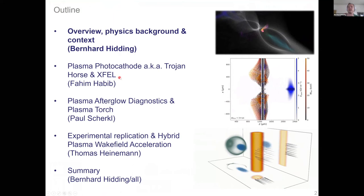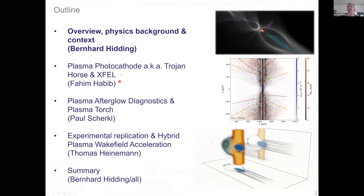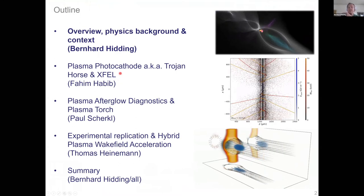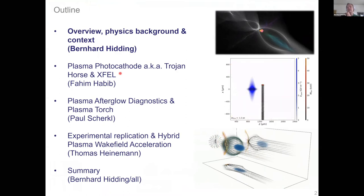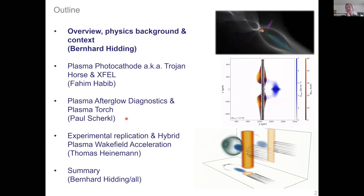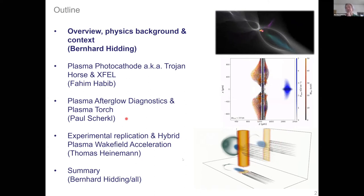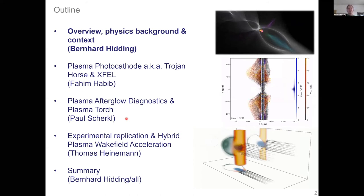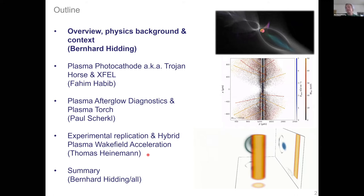I'm starting with an overview and the physics background of what we are doing, then Fahim, Paul, and Thomas — PIs in my group who concentrate on certain aspects of our simulations — will take over. I give the physics background and overview, then Fahim will talk about the plasma photocathode concept, Paul will cover diagnostics of ultra-high brightness beams, and Thomas will discuss how we replicate and analyze experiments and scale down accelerator size.